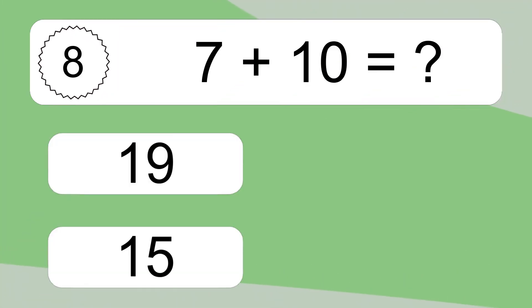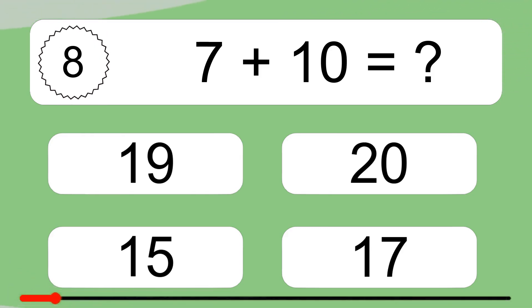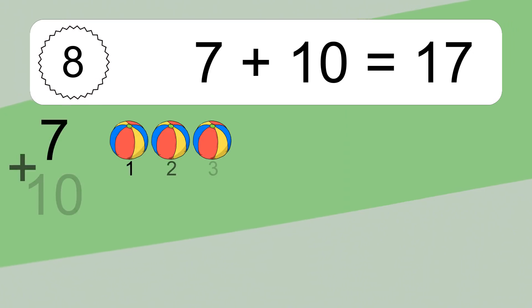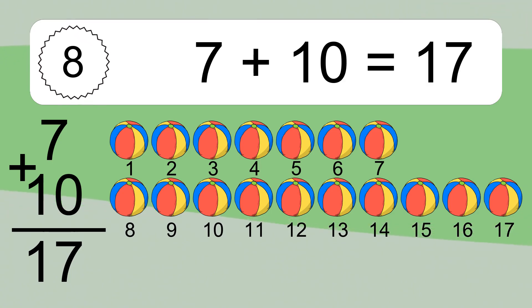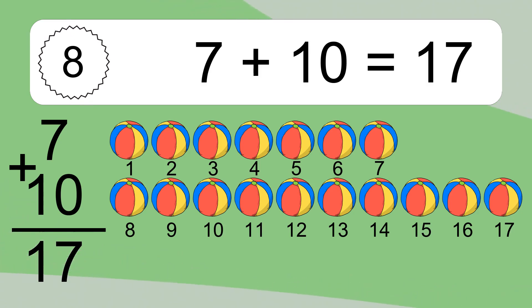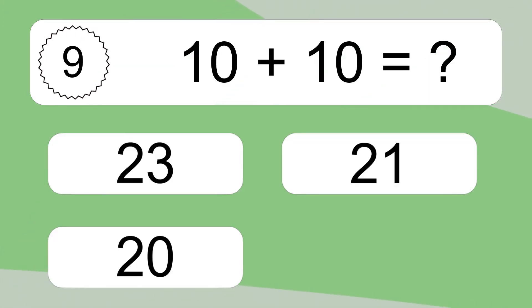7 plus 10 equals what? 7 plus 10 equals 17. Let's count it: 1, 2, 3, 4, 5, 6, 7, 8, 9, 10, 11, 12, 13, 14, 15, 16, 17.